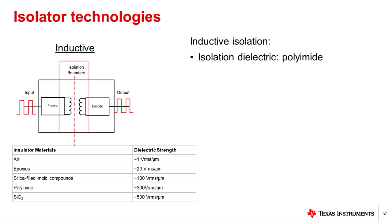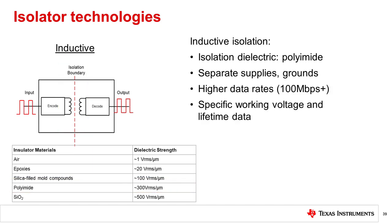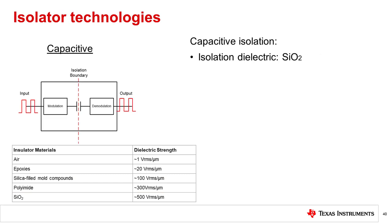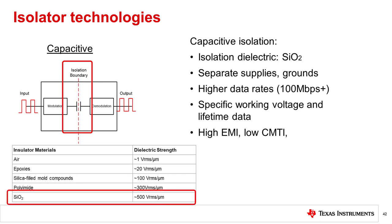Inductive isolators are based on a transformer technology using an insulation material called polyimide. The logic inputs are used to generate an electromagnetic field and to transfer proportional energy signals across the inductive transformer barrier. Capacitive isolation is based on energy transfer across a silicon dioxide barrier through a high-frequency carrier. A digital input signal is applied and modulated, then communicated across the isolation barrier, and a proportional output is produced. Because capacitive isolators are designed with the highest dielectric strength material for insulation, they offer high data rates, low thermal profiles, and long lifetime operation.